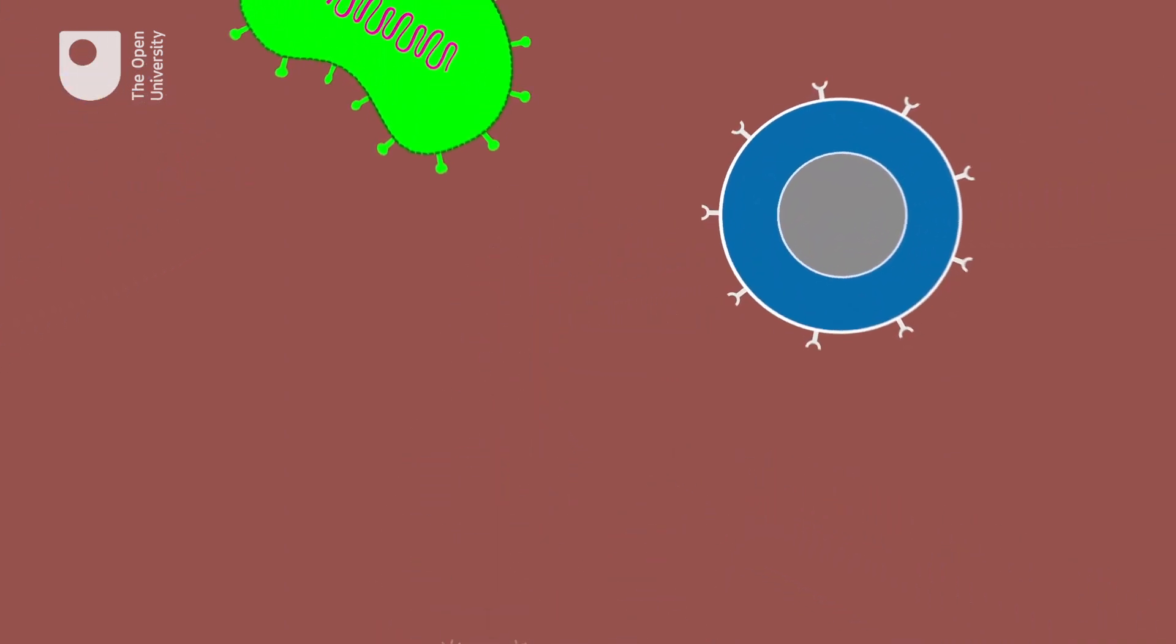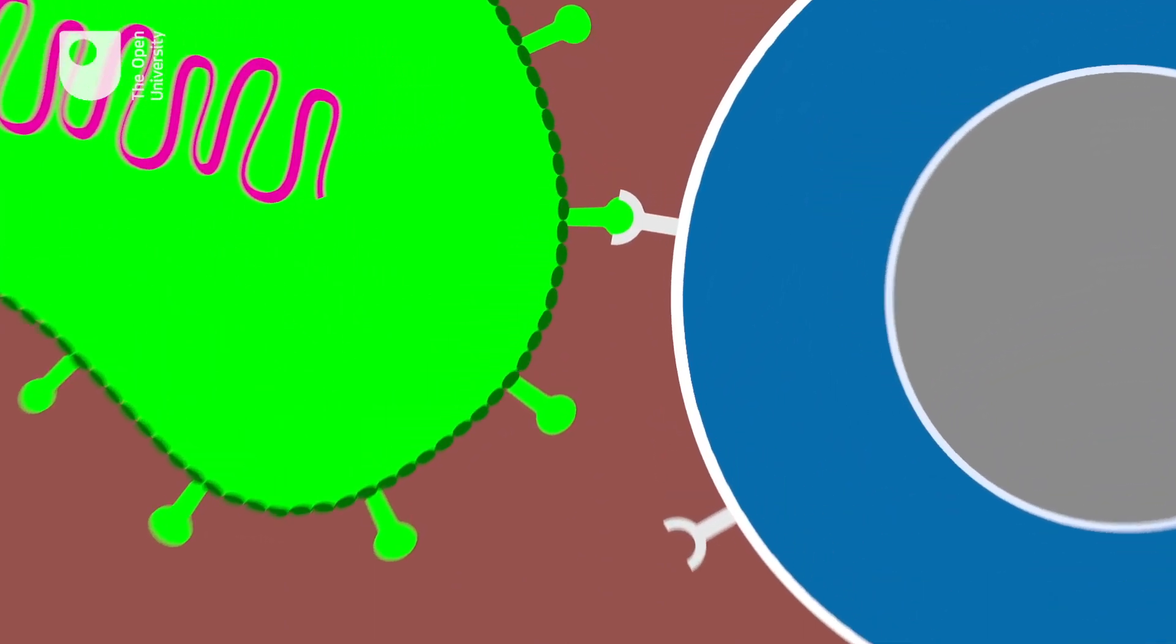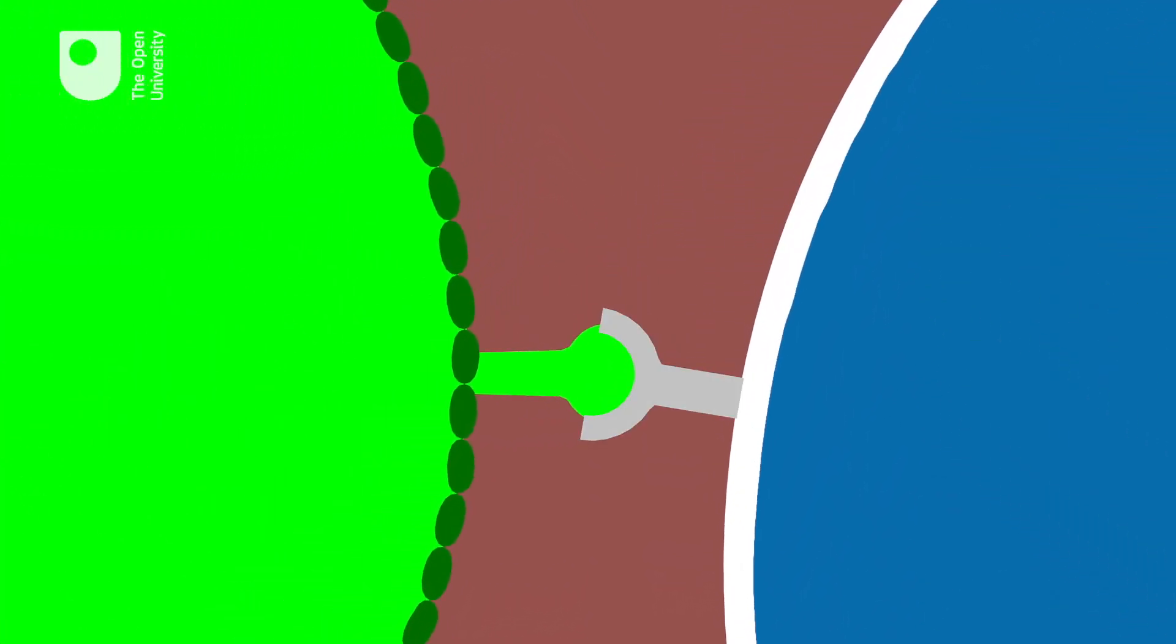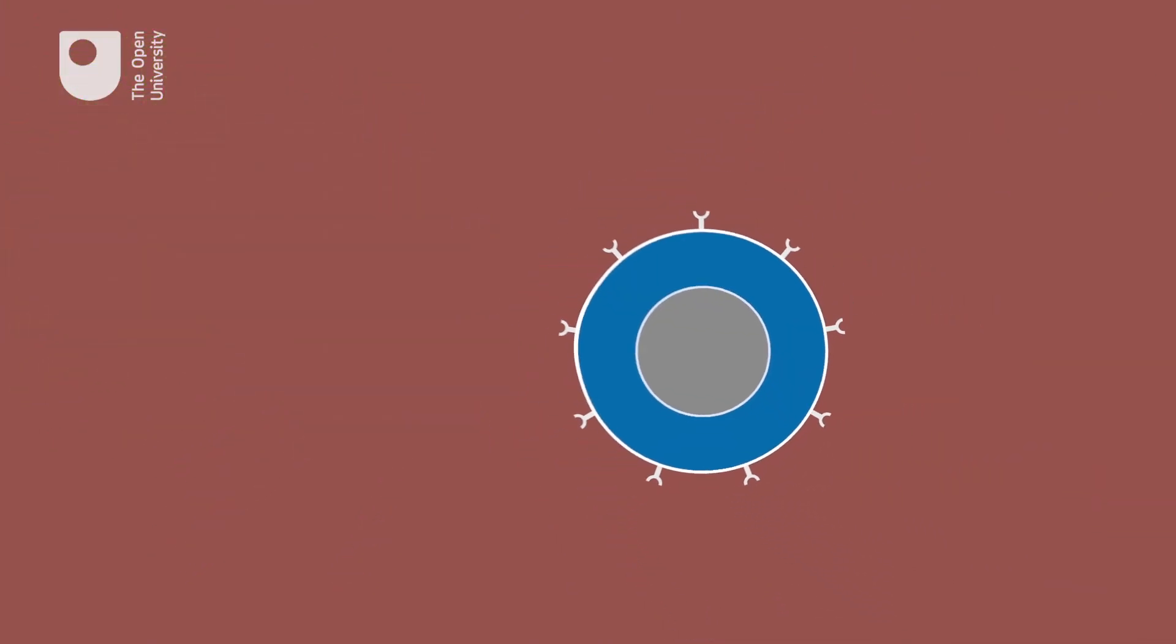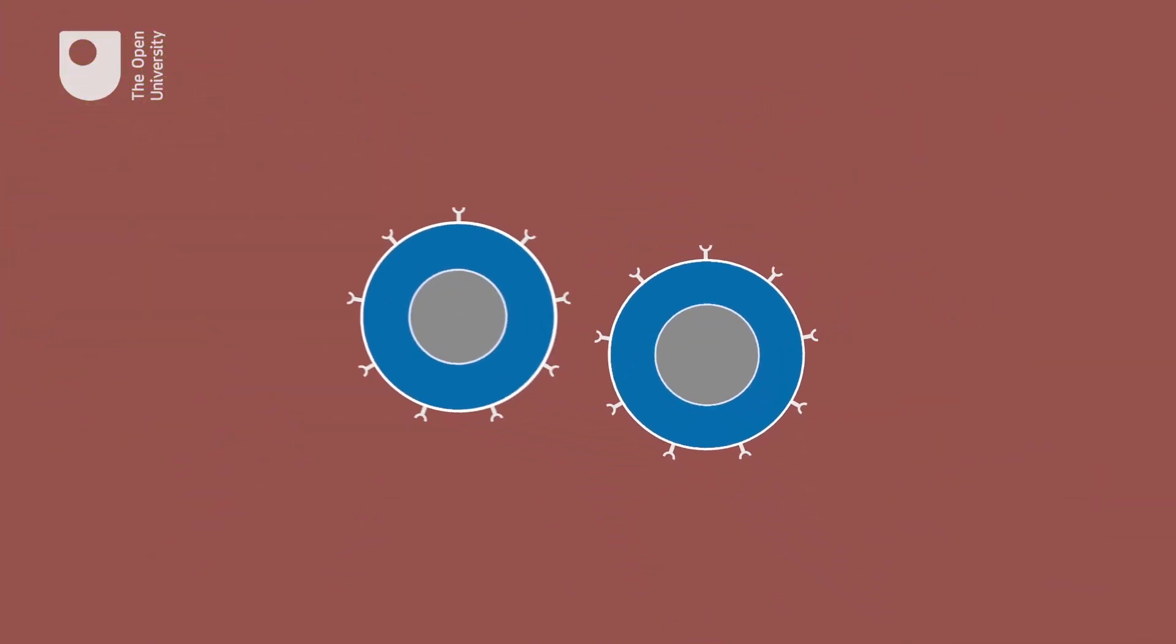During a primary encounter with a pathogen, the B cell binds to the pathogen via receptors and eventually becomes activated. At this point, it starts dividing, producing copies of itself.